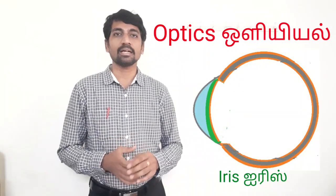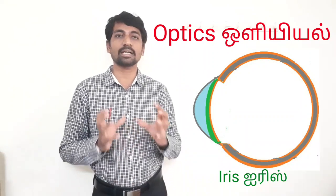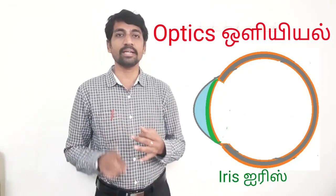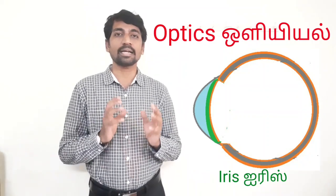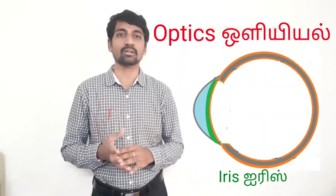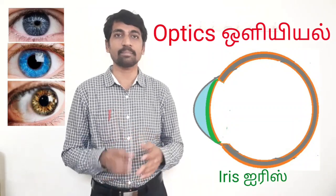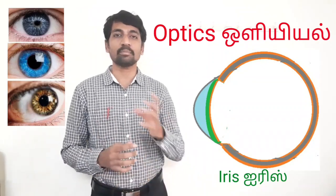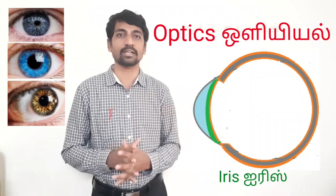The next part is the iris. The iris is the colored part of the eye — it can be blue, green, or brown, with very different colors. It has a unique color, pattern, and texture, and the iris varies across different individuals.